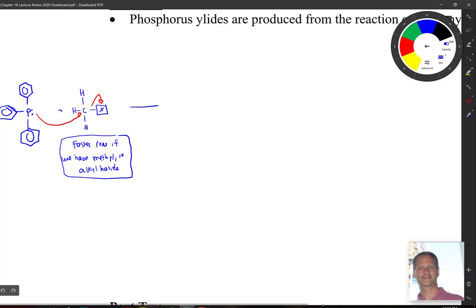Highlighting that, that is an SN2 reaction. Looks like one, it is one. And what that's going to give us here is our phosphorus connected to a CH3.